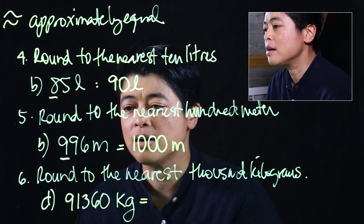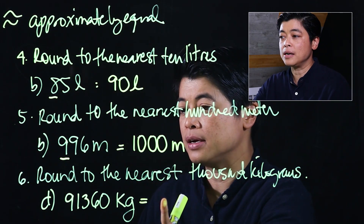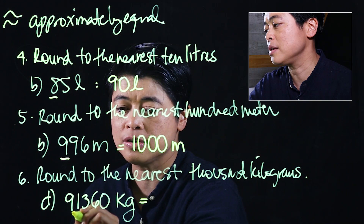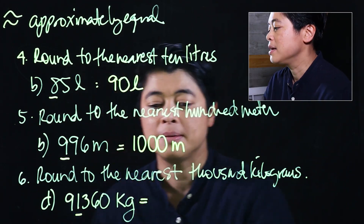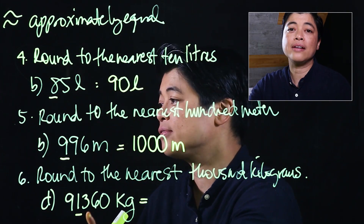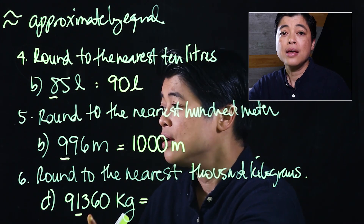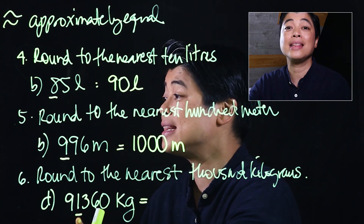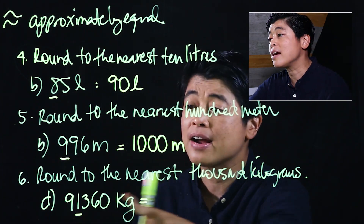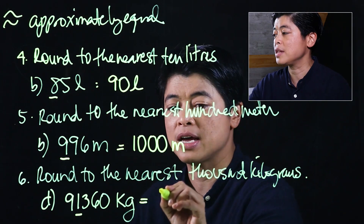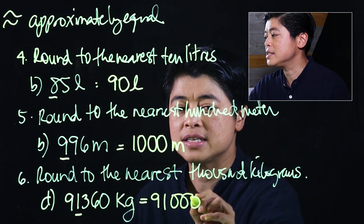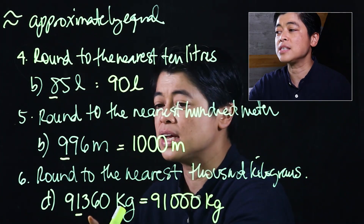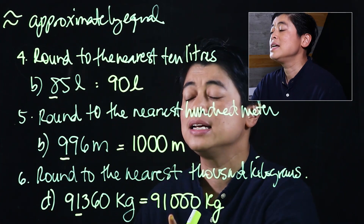On the last example, it says round to the nearest thousand kilograms, so we underline the thousands place. If we look at the number after the thousands place, it's a three, which means the thousands place will stay the same and everything thereafter becomes zero. So to the nearest thousand kilograms, 91,360 is 91,000.